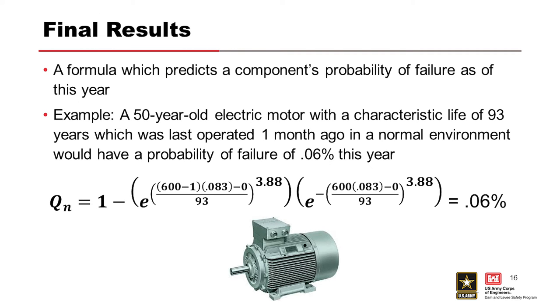The final results. So, using those parameters for this, our example motor, a 50-year-old electric motor with the characteristic life of 93 years, which was last operated one month ago in a normal environment would have a probability of failure of 0.06% this year.